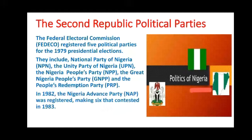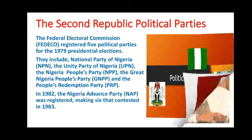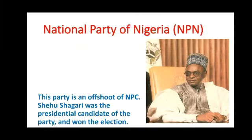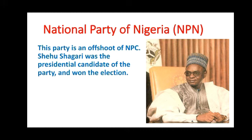Let's look at the NPN — the National Party of Nigeria. The National Party of Nigeria came up as a result of the defunct NPC, that is the Northern People's Congress. The presidential candidate of the NPN was Alhaji Shehu Shagari, and he was the one who won the presidential election of the 1979 general elections.